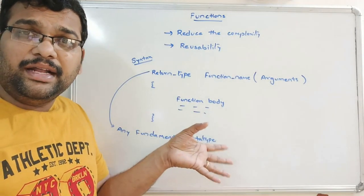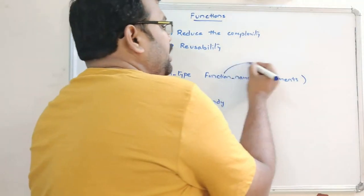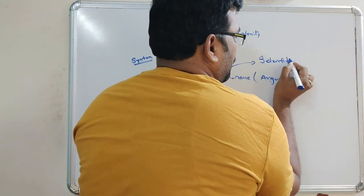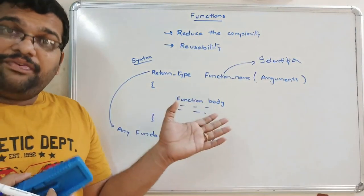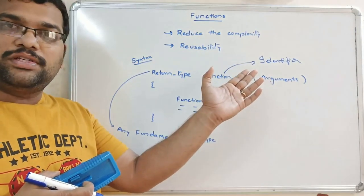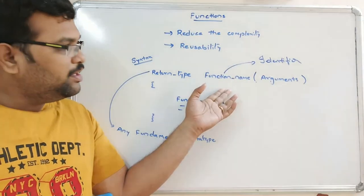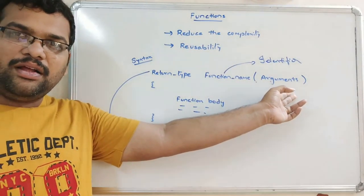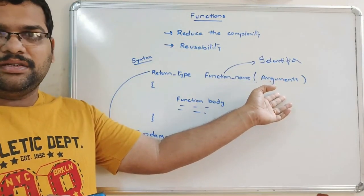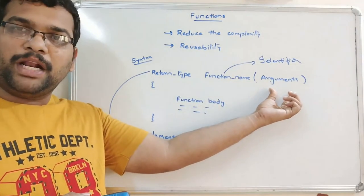If you are not mentioning any return type, by default the compiler will treat it as integer. The function name is nothing but an identifier — it is a user-defined name. We have to follow the rules of an identifier when giving a name to a function. The arguments are the inputs passed to the function. If a function takes two inputs, we have to pass two parameters.